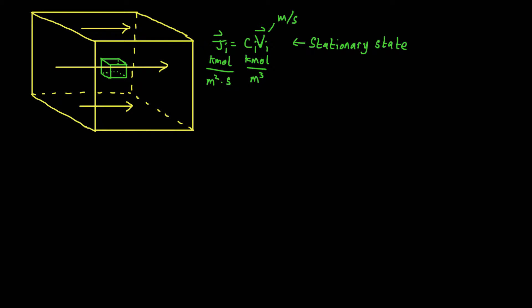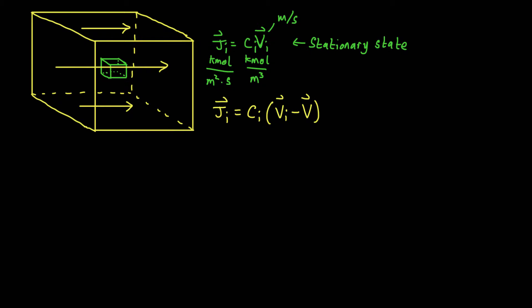If we want to incorporate this extra flux, and calculate the diffusive flux given this extra velocity of the system, then we have to subtract that out. So the diffusive flux of species I is still the density multiplied by the velocity of species I, minus the velocity of the system. And obviously if the velocity of the system is zero, we recover our initial stationary state.